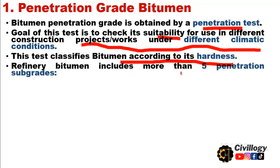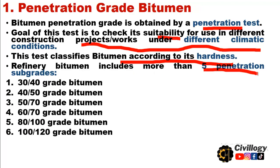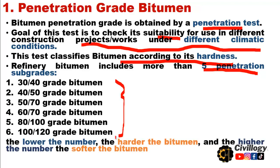Refinery bitumen includes more than five penetration subgrades. The first one is 30/40, and similarly the list of subgrades goes up to 100/120 grade bitumen. The lower the number, the harder the bitumen, and the higher the number, the softer the bitumen.